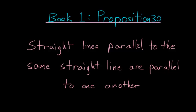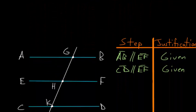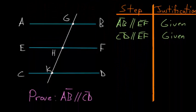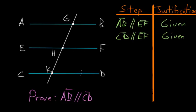Book 1, Proposition 30 of Euclid's Elements: straight lines parallel to the same straight line are parallel to one another. Starting with three straight lines AB, EF, and CD, and a transversal that cuts across them — if line AB is parallel to line EF, and line CD is parallel to line EF, we want to prove that line AB is parallel to line CD.